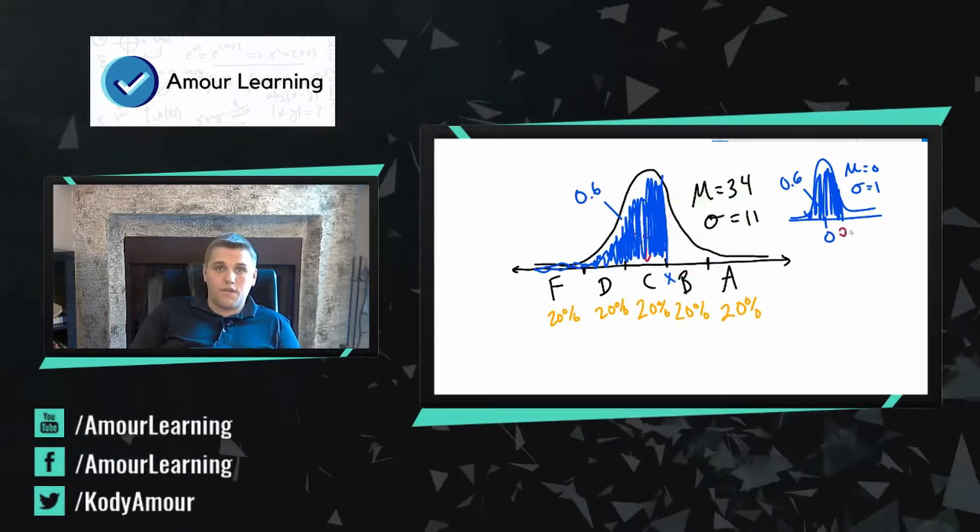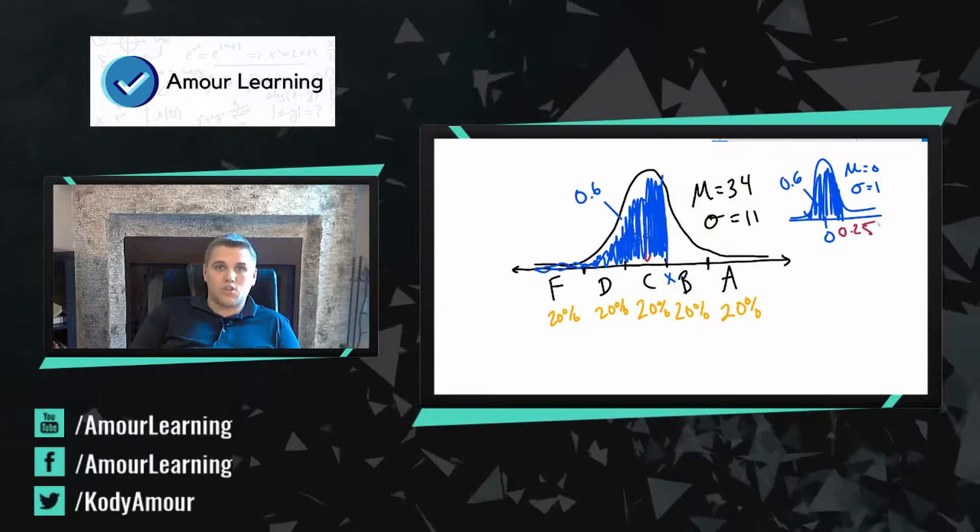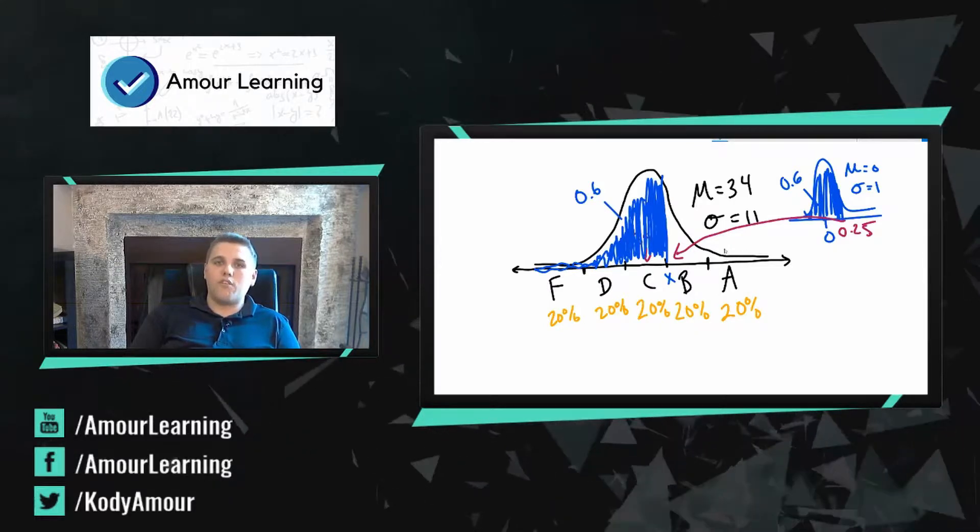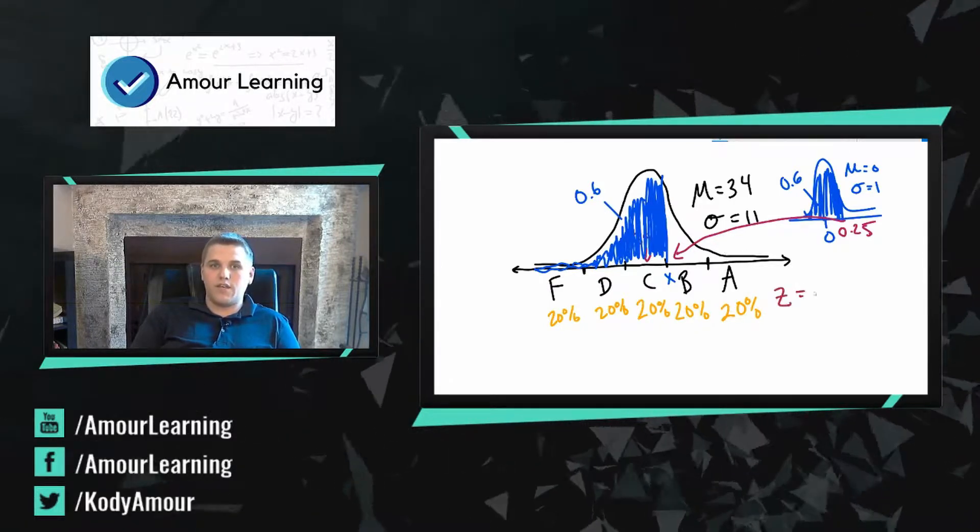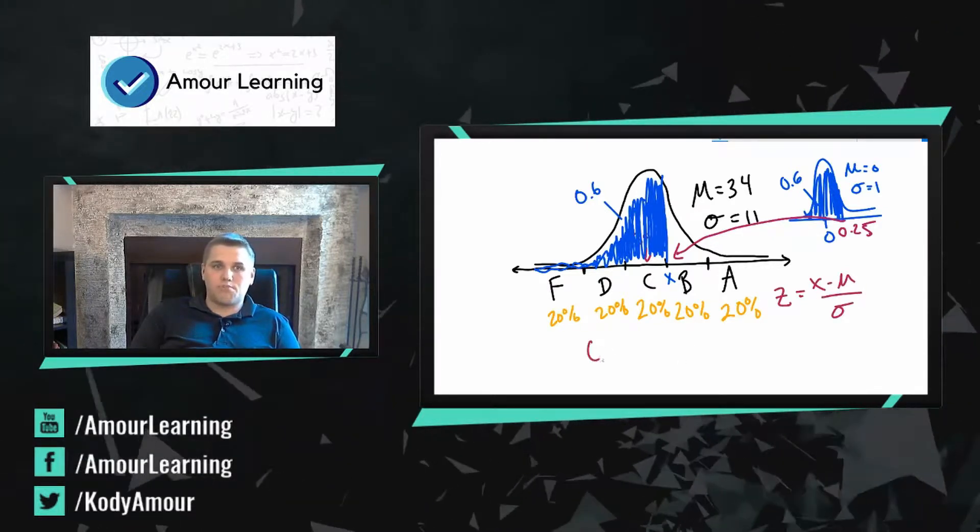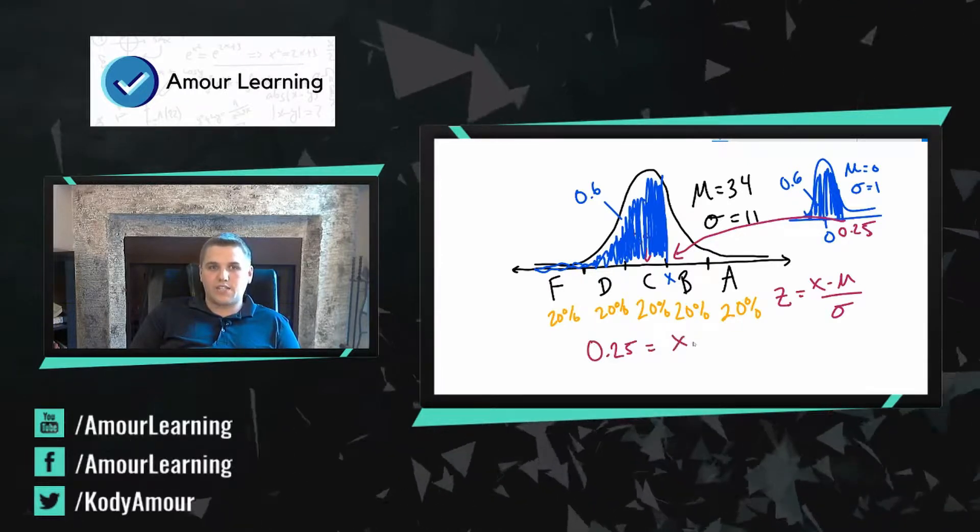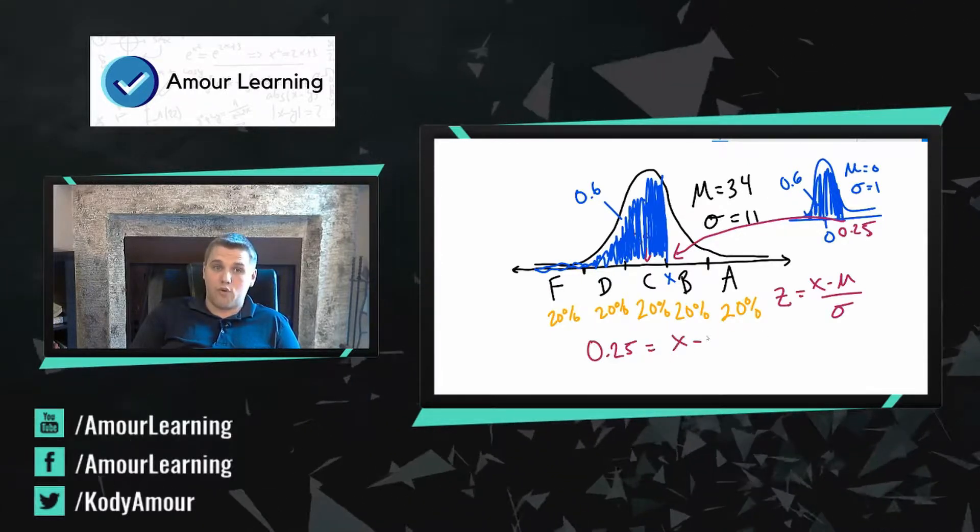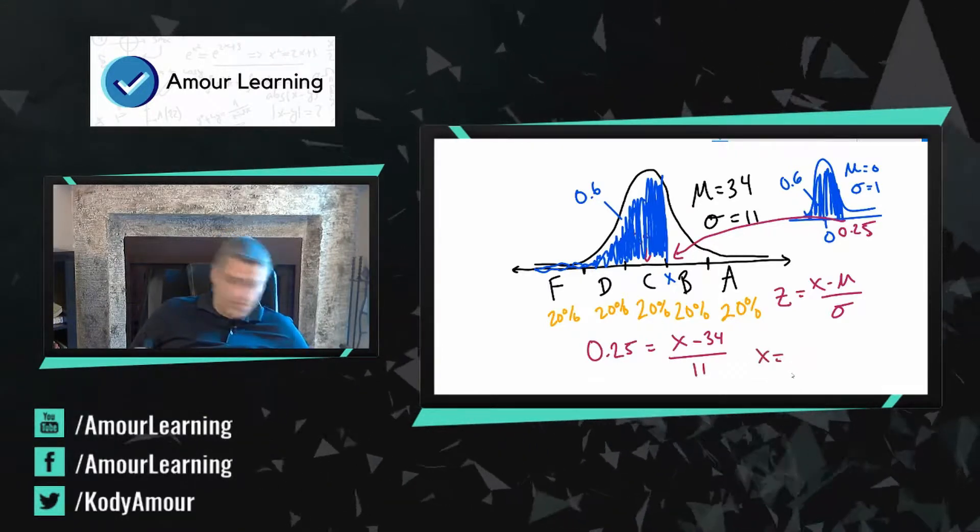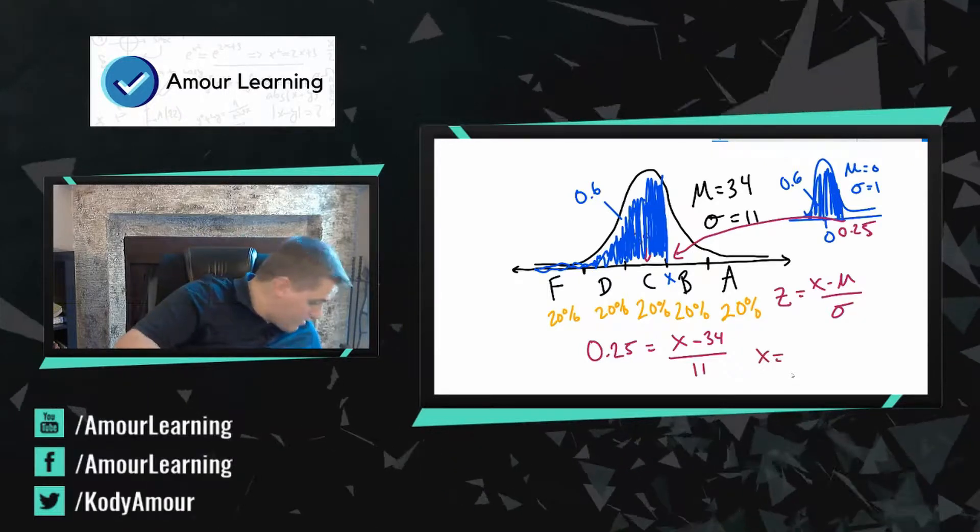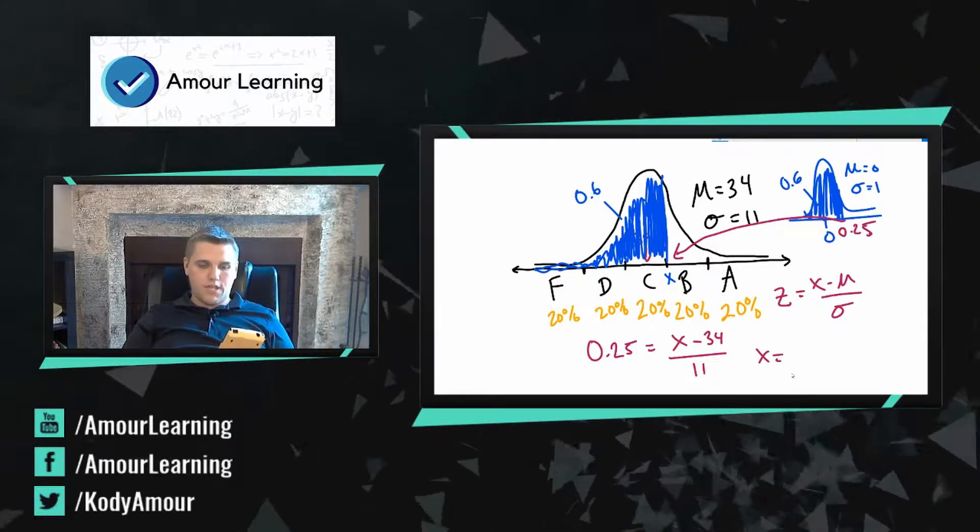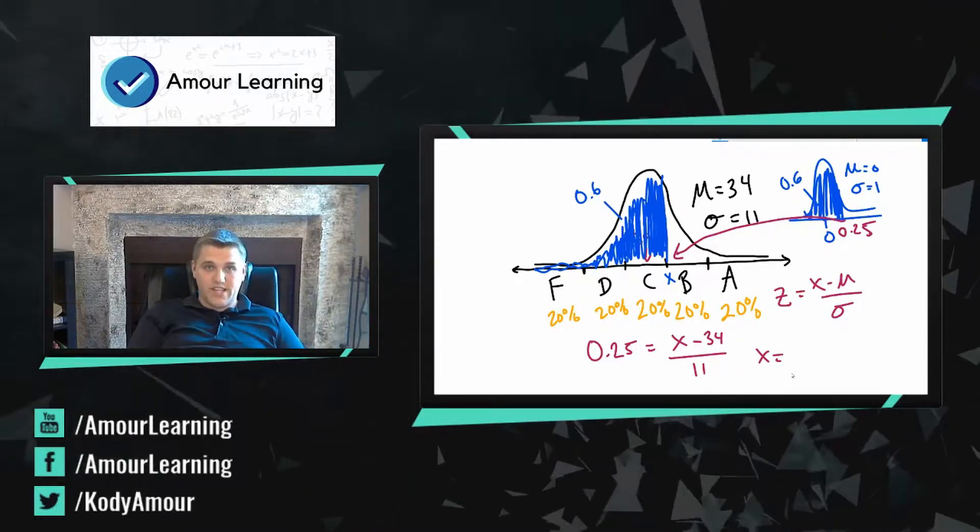So this z-score right here is 0.25. And now, now that we know what the z-score is, we can find the corresponding grade for that z-score. And the way we do that is through the formula z equals x minus mu over sigma. In this case, my z is 0.25 equals x minus my average is 34 on the test. And my standard deviation for the test was 11. So in this case, x is, let me grab my calculator real quick, 0.25 times 11 plus 34, which is 36.75.